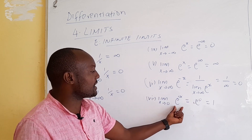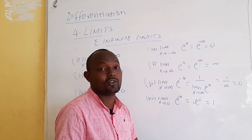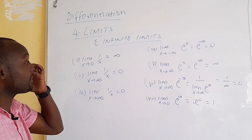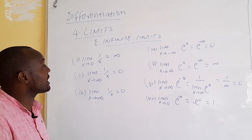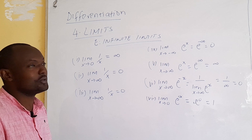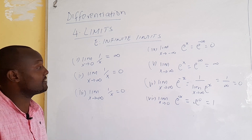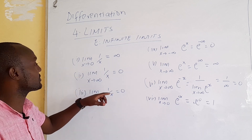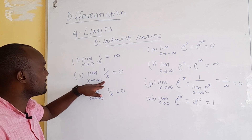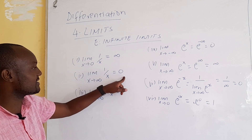If you have e to the power of x and x approaches 0, it is just like e to the power of 0, and any number raised to the power 0 equals 1. So these rules are important to understand infinite limits: 1 over 0 is infinite, and 1 over infinite is 0.